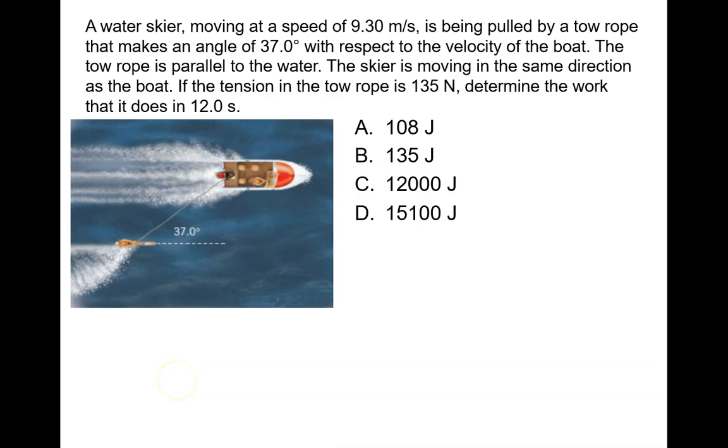The water skier is moving at a speed of 9.30 meters per second. The skier is being pulled by a tow rope that makes an angle of 37 degrees with respect to the velocity of the boat.